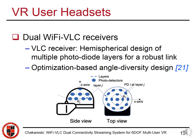The VR headsets feature dual Wi-Fi and VLC receivers, where the VLC receiver comprises a hemispherical design of multiple photodiode layers for a robust link. No matter what the user's head orientation may be, at least several of these photodiodes will be able to connect with the optical link. We optimize the design based on an angle diversity approach.